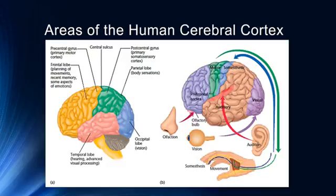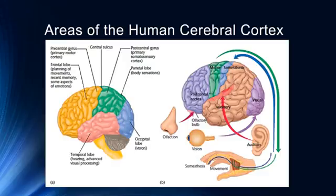At the very end of the frontal lobe is the precentral gyrus, located just anterior to the central sulcus — this is the primary motor cortex. Just posterior to the central sulcus is the postcentral gyrus, which is our primary somatosensory cortex, contained in the parietal lobe shown in green. The occipital lobe is entirely devoted to visual processing, and the temporal lobe, shown in pink, is our primary auditory cortex, handles some advanced visual processing such as the fusiform face area, and is involved in some linguistic abilities.